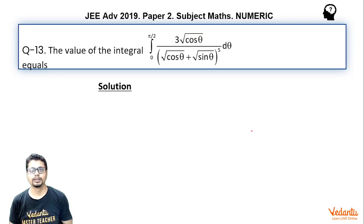Integral 0 to 2a fx dx is equal to integral 0 to a f of x plus f of 2a minus x dx.